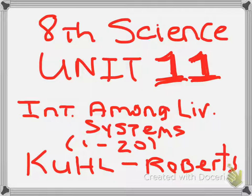Number twenty is your last question: Decomposers break down fallen leaves on the forest floor. When they do this, they release carbon dioxide into the atmosphere and nitrogen to the soil. Which of the following organisms would most likely be decomposers? F) bacteria and mold, G) deer, H) grasses, J) mountain lions.